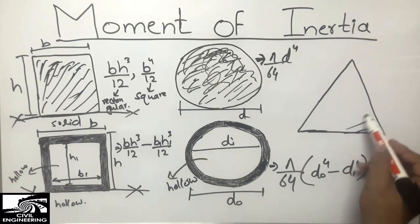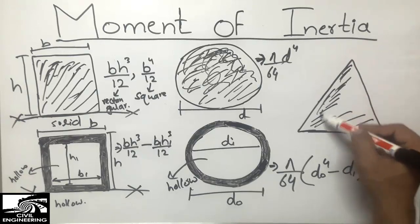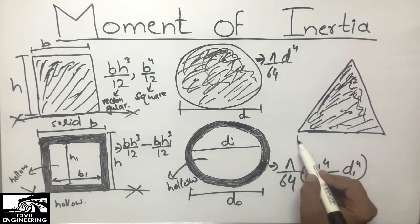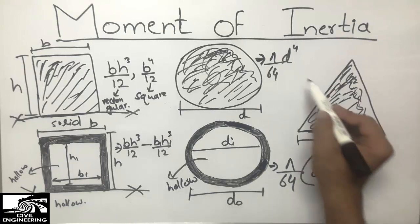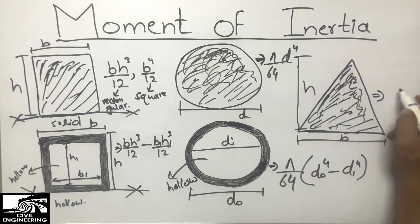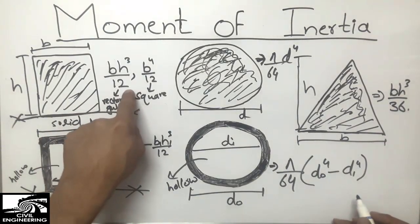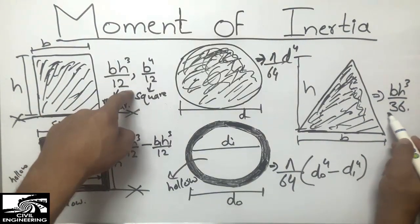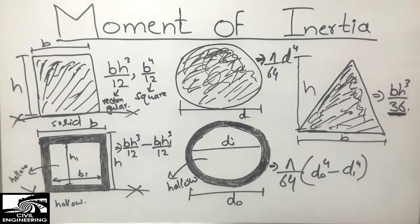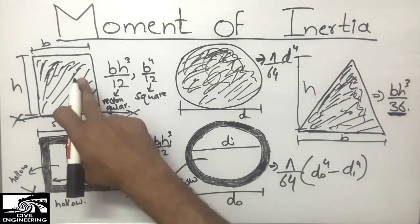One shape remaining is the triangular section. Sometimes we encounter triangular section beams. For a triangle with base b and height h, the moment of inertia is bh³/36. This is similar to the rectangular formula bh³/12, differing only in the denominator — 36 instead of 12.